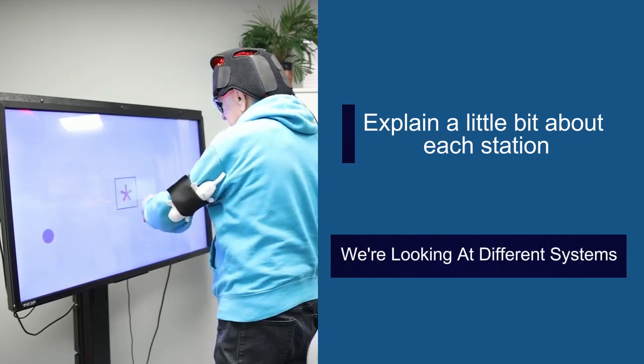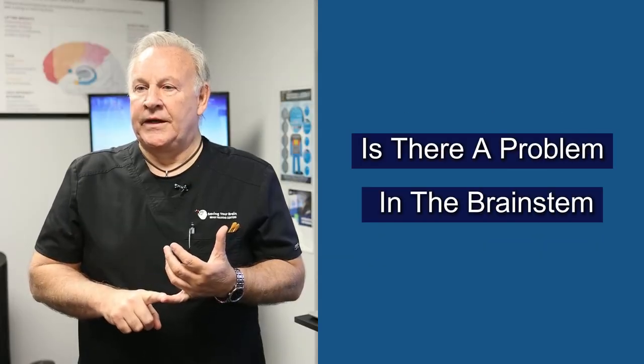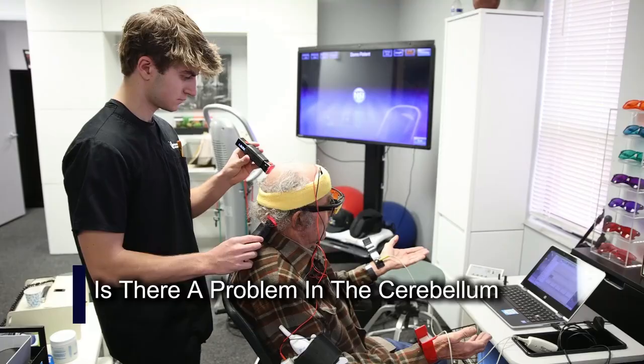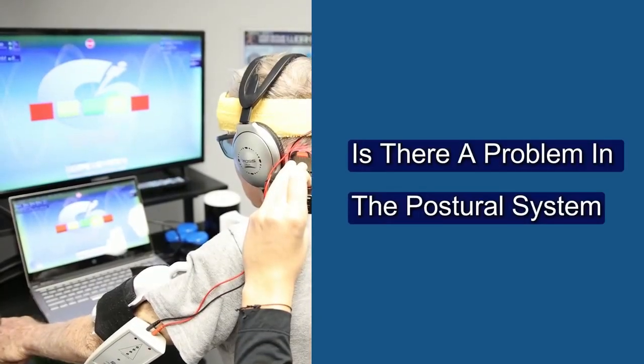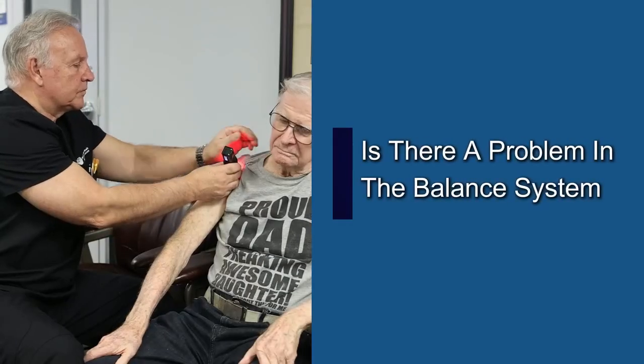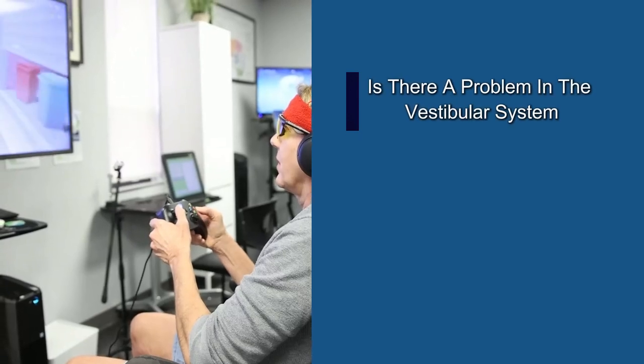We're looking at different systems. Is there a problem in the brainstem? Is there a problem in the cerebellum? Is there a problem in the postural system? Is there a problem in the balance system? Is there a problem in the vestibular system?